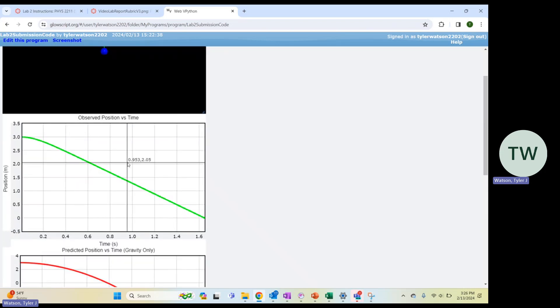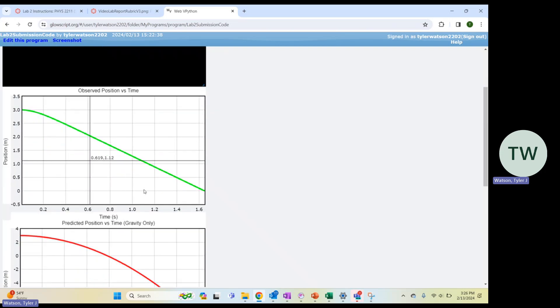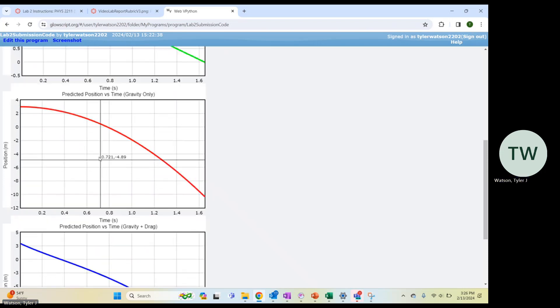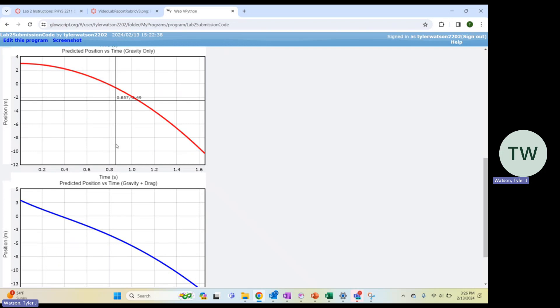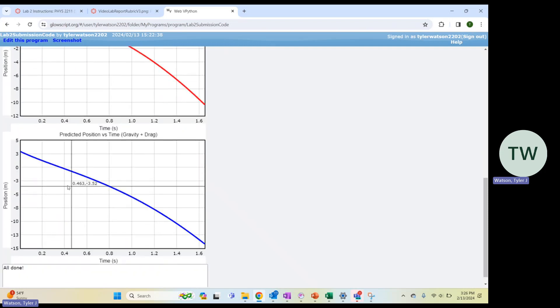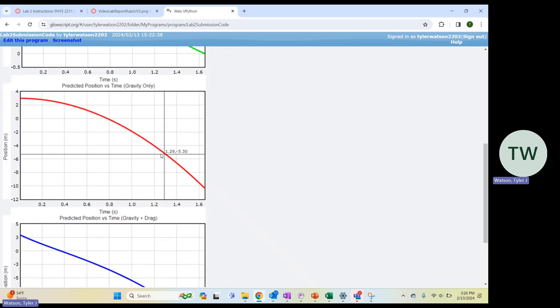The first one you can see is our observed position versus time graph. And we can see that it took a little more than 1.6 seconds to hit the ground. And then next is our two predicted graphs. As you can see here, the bottom one includes drag force. So it did have an effect on the position of the eraser as it was traveling down just compared to our normal gravity force.